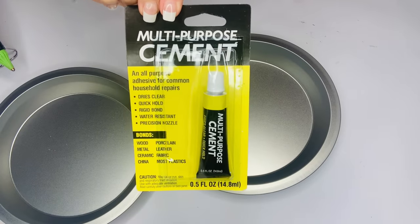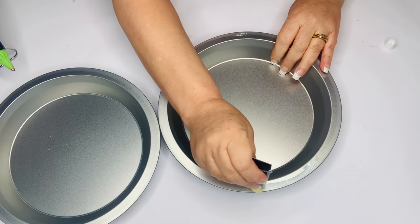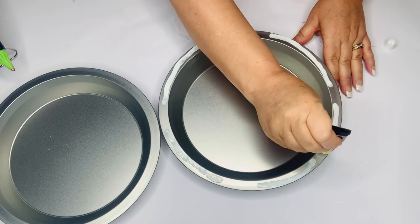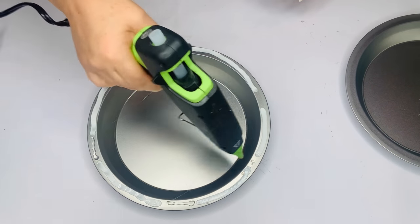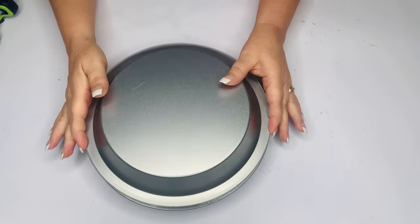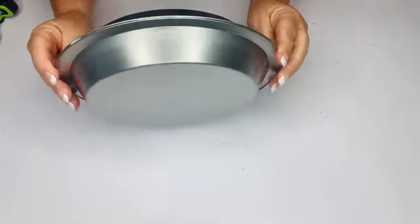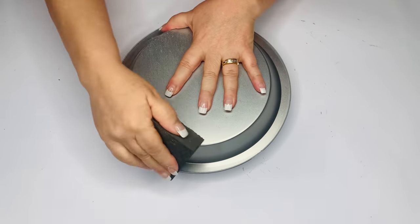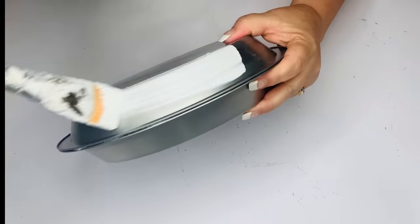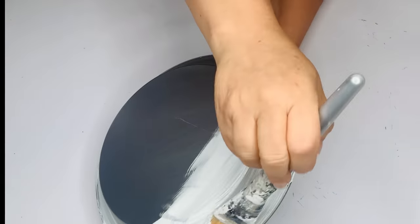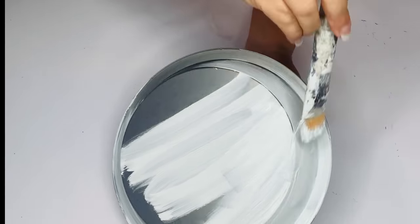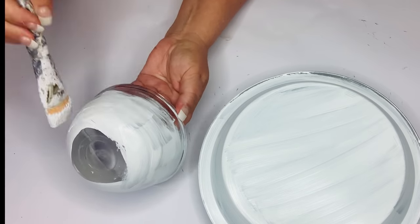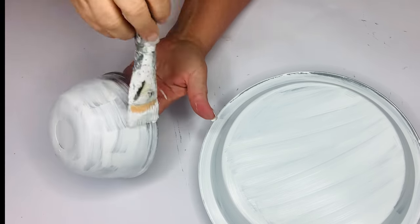I'm going to start with my multi-purpose cement from Dollar Tree and stagger some lines on the lip of my pie tin. Then I'll put hot glue in between those lines so they don't mix. The hot glue is for immediate hold and the cement for permanent hold. Then I'll place my second tin on top. Once I have it looking like a perfect UFO, I'll take my sanding sponge and sand it down so the chalk paint will adhere better.